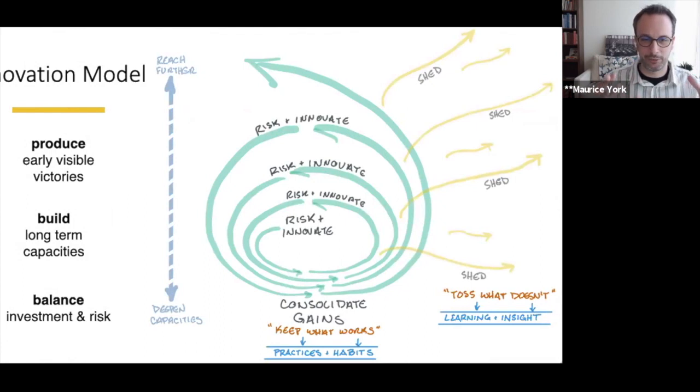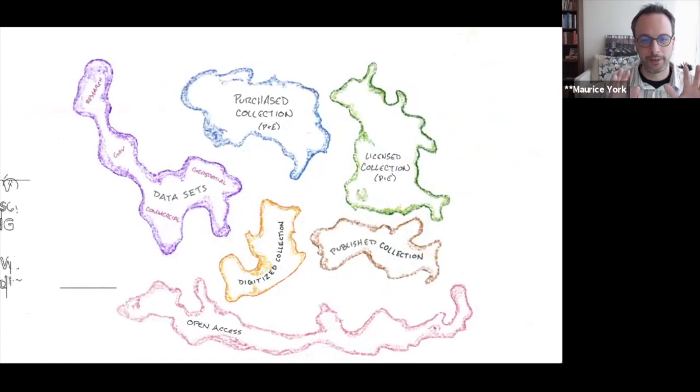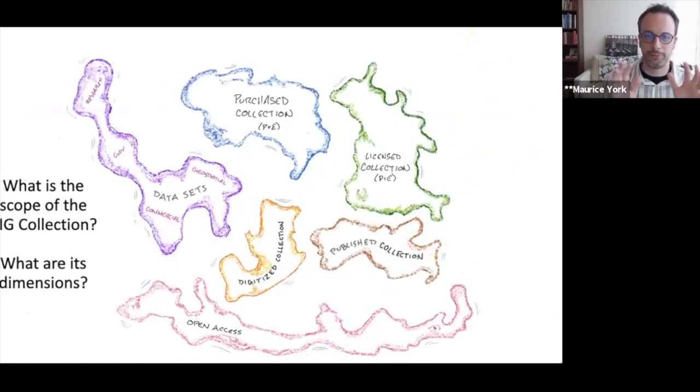You've seen me put up this slide before of the innovation model. So this is where we start to take this step into imagination. And we can look at this wonderful picture. How does that work? So it's a different model than what we're used to. This spiral of risk and innovation, consolidating the gains, keeping what works, setting aside what doesn't, and then doing a new round of investment and consolidating the gains for that. Reaching further, deepening our capacities. So how is that going to work? I want to step to my picture of the continents. Another thing that we've looked at before.